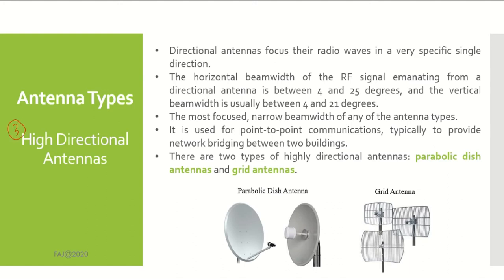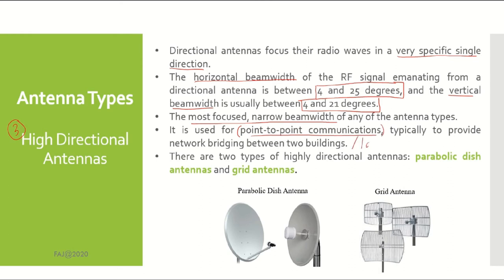The last type is the highly directional antenna. This type of antenna focuses radio waves in a very specific single direction. For horizontal beam width, the RF signal emanates between 4 and 25 degrees, while vertical beam width is usually between 4 and 21 degrees. This type of antenna has the most focused, narrow beam width of any antenna type. It is used for point-to-point communications, typically to provide network bridging between two buildings, and is also suitable for long distance communication. Two popular types of highly directional antennas are the parabolic dish antenna and the grid antenna.